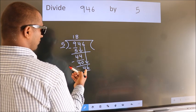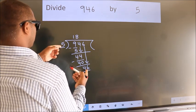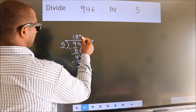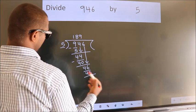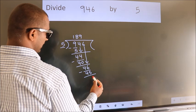A number close to 46 in 5 table is 5 9s 45. Now we subtract. We get 1.